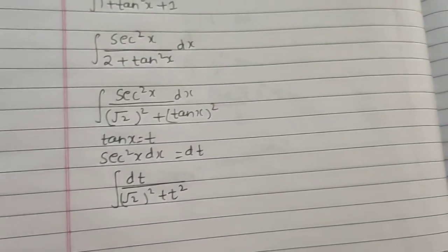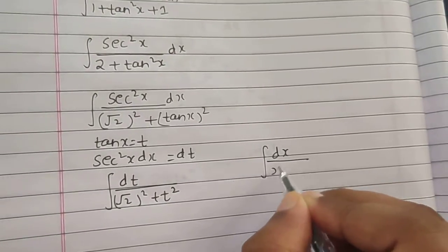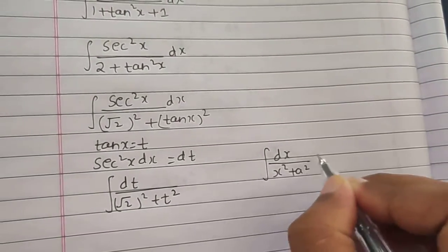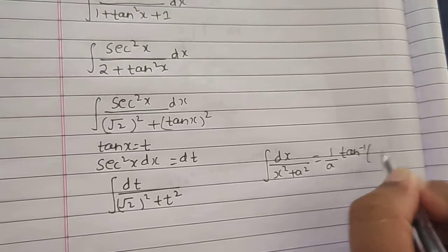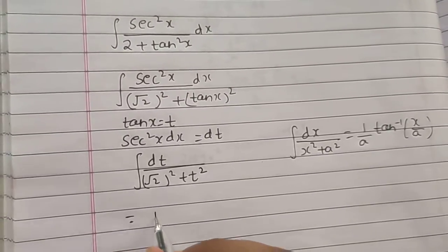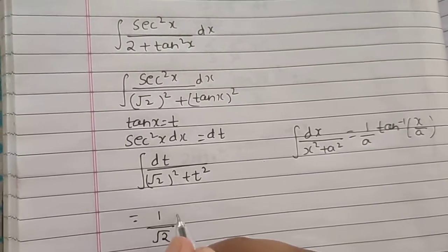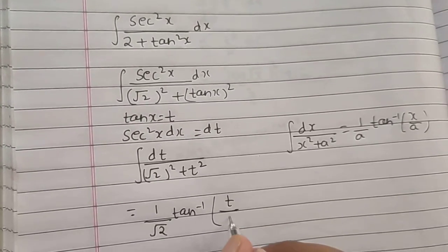∫dx/(x² + a²) is a famous special integral: (1/a)tan⁻¹(x/a). So here we will have (1/a)tan⁻¹(x/a). In place of x I have t divided by a.